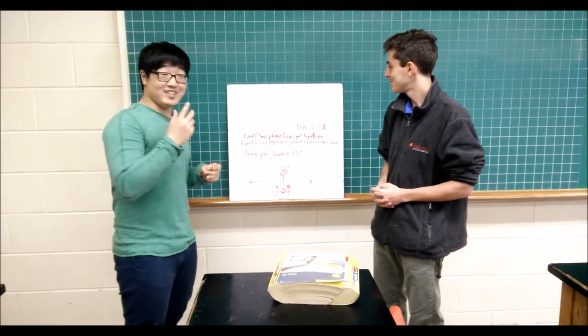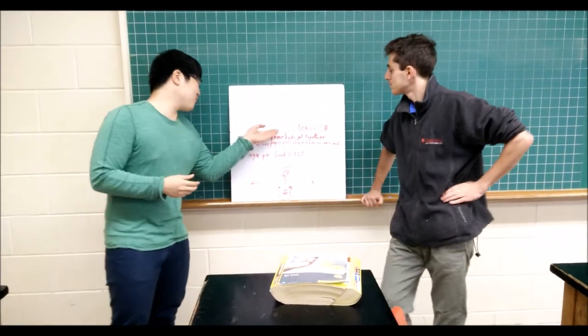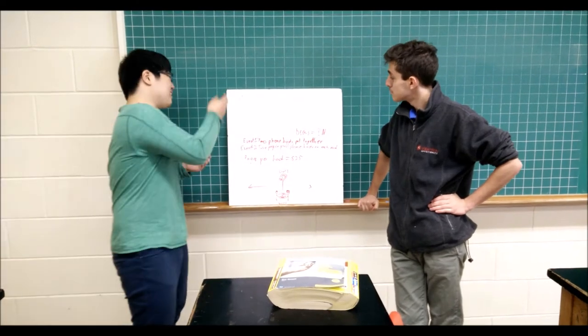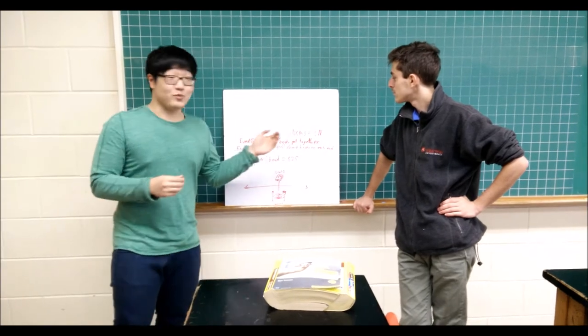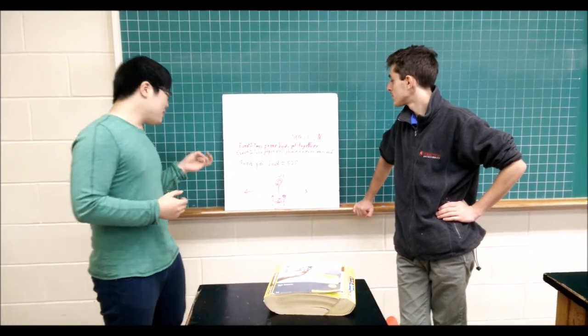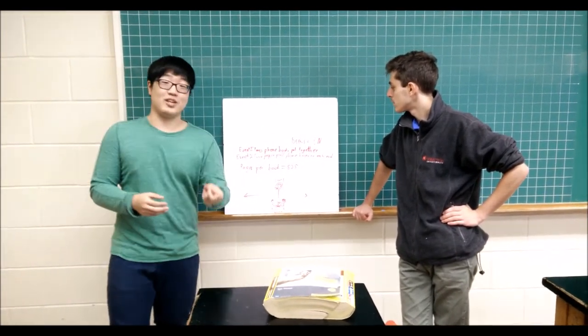Alright, so the variables we need to find to find the force to pull apart the books is the mass of the phone book, which is 1.09 kilograms, the coefficient of friction, which is 0.4, and the pages per book, which is 825 pages.